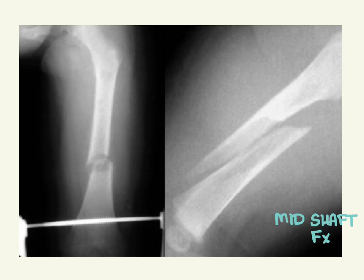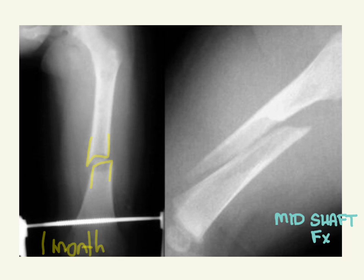Mid-shaft fractures don't necessarily have to be due to abuse, but history matters. If a one-month-old's mom says the baby rolled out of bed and sustained a femur fracture, that doesn't make developmental sense — a one-month-old cannot roll and fall out of bed. The force required to break the femur is significant, so just falling out of bed is unlikely to cause that.